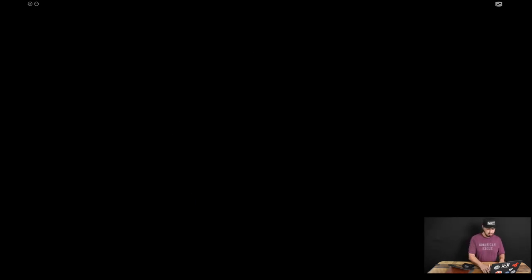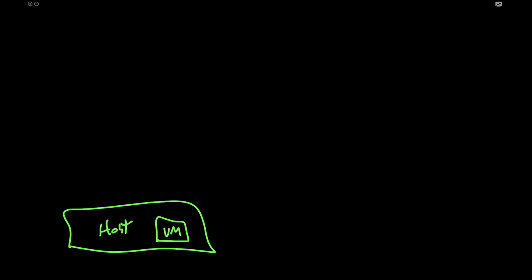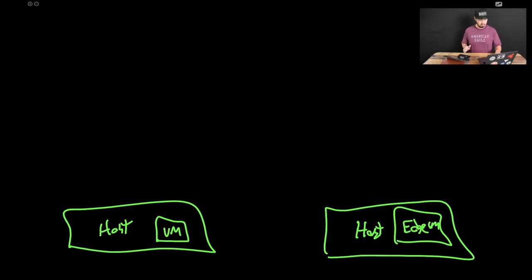So actually, let me draw this out a different way. So let's say we have a host here and on that host we have a VM, and over here we have another host. And on that we have our edge VM. That's hard to read, but you get the point. And keep in mind, we normally would have two of those edge VMs for HA, but we're kind of simplifying it just to illustrate this point.